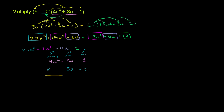First, let's multiply negative 2 times the entire trinomial, just as in the distributive property. Negative 2 times negative 1 is positive 2, written in the a to the 0 place. Negative 2 times 3a is negative 6a, written in the a to the first power place. Then negative 2 times 4a squared is negative 8a squared, written in the a squared place.